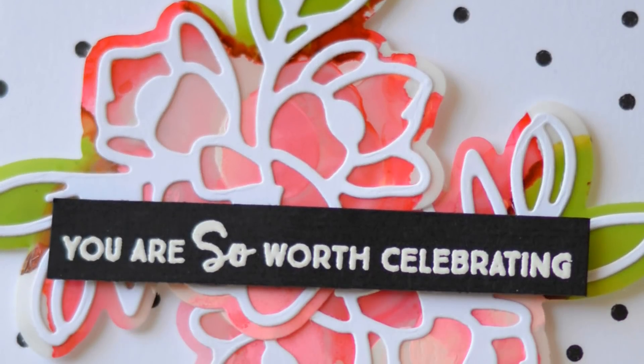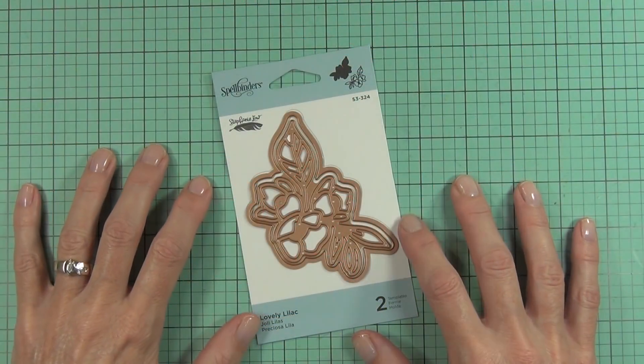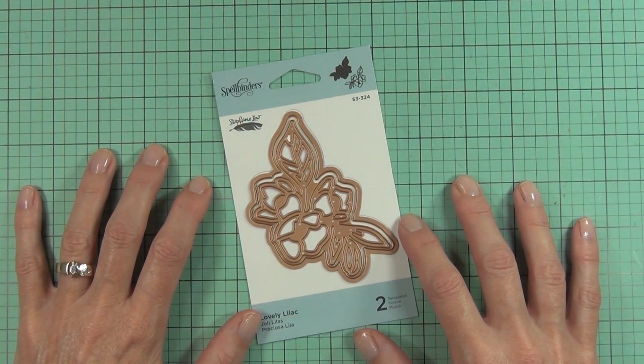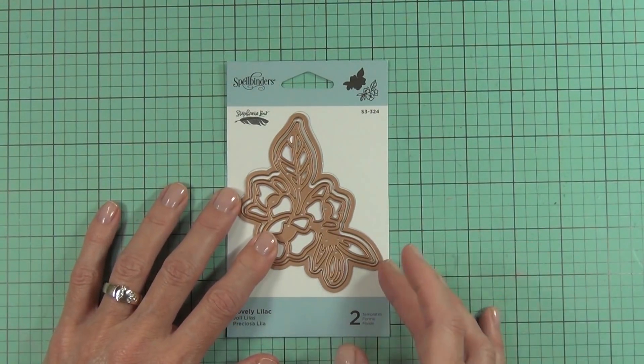Hi, it's Therese from Lost in Paper and I'm here for Scrapbook with You today. I have a card that I'm going to be making with translucent Yupo flowers using this Spellbinders set called Lovely Lilac.